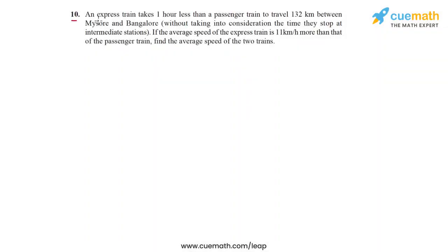In question 10, the problem statement says an express train takes one hour less than a passenger train to travel 132 kilometers between Mysore and Bangalore, without taking into consideration the time they stop at intermediate stations. If the average speed of the express train is 11 kilometers per hour more than that of the passenger train, find the average speed of the two trains.